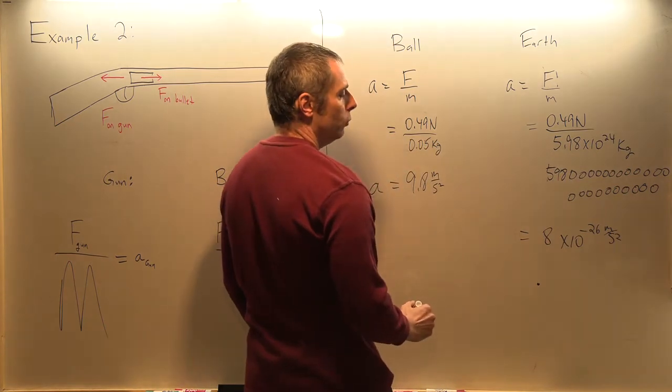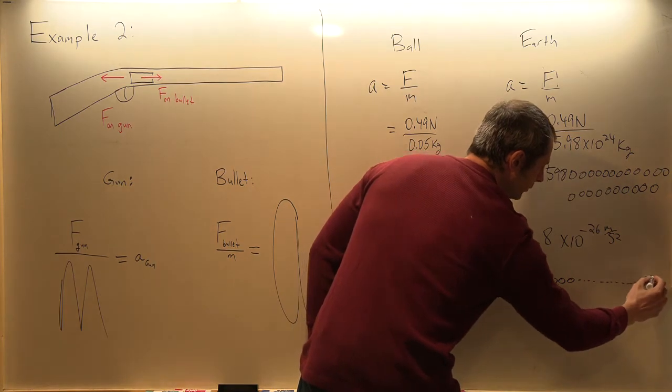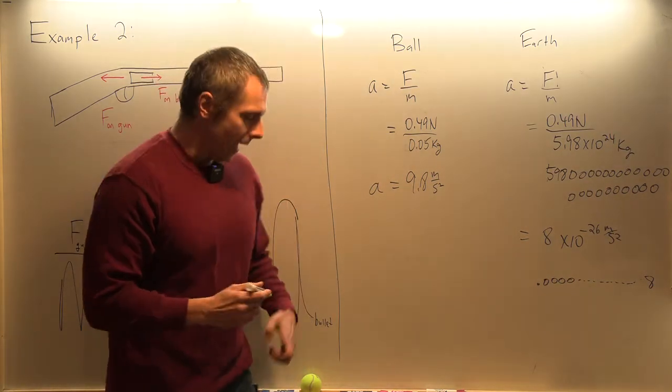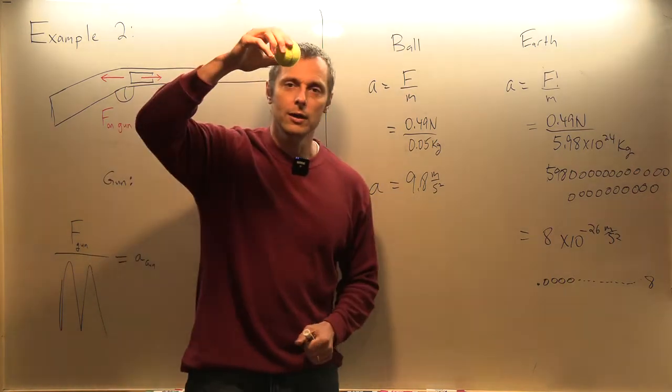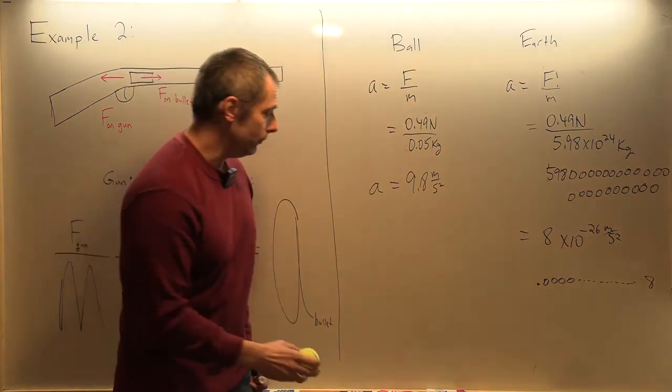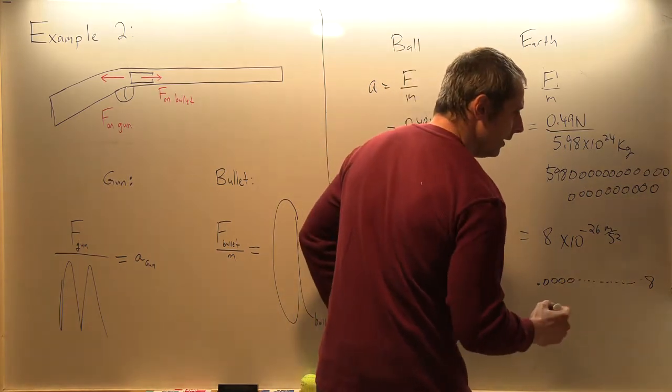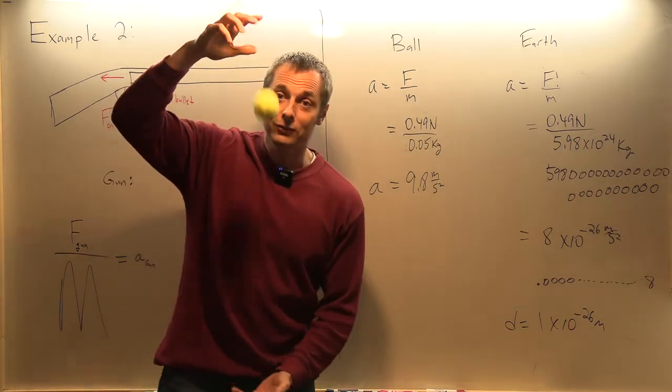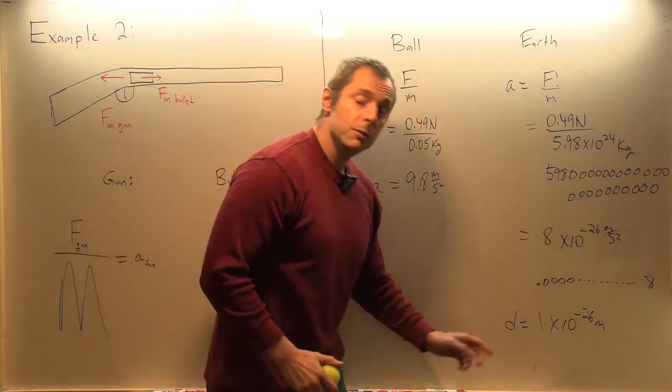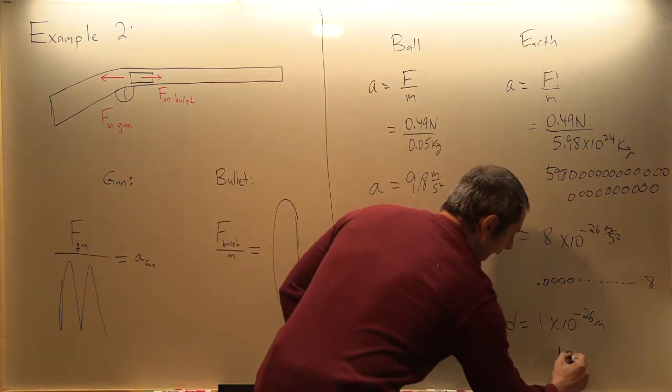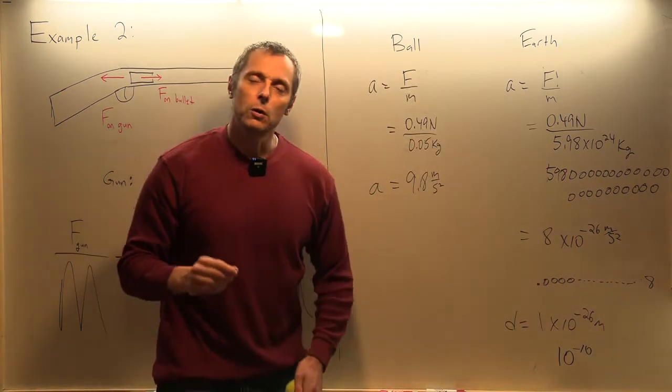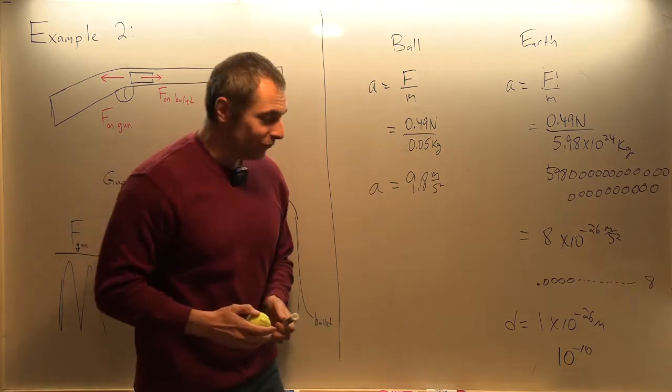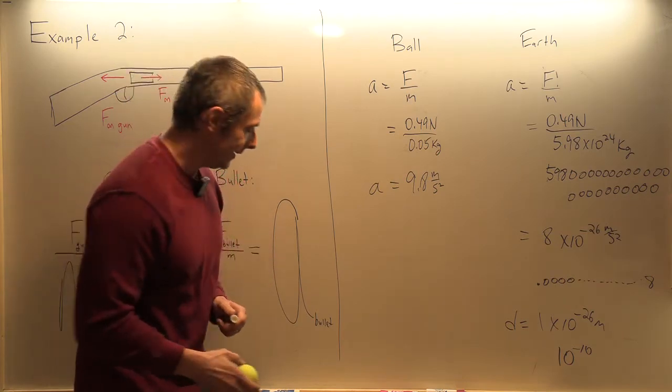When you divide that out, you get about 8 times 10 to the negative 26 meters per second squared. A tiny acceleration. That is, point with 25 zeros and then an 8. That's not even a millionth of a meter per second squared. That's not even a billionth, not even a trillionth. If we use d equals one half a t squared for 0.5 seconds to fall, we get approximately a distance of 1 times 10 to the minus 26 meters. So yes, the Earth does fall up. The entire Earth comes up, but it comes up such a tiny distance. To give you a reference point, an atom is about 10 to the minus 10th meters. So we're talking not even the billionth or trillionth of a single atom. So fascinating. It happens. We just can't feel it or even detect it.